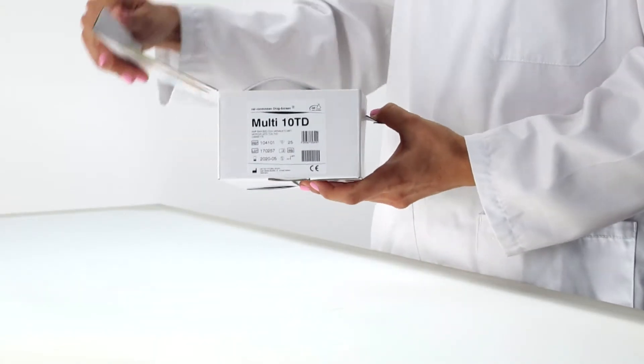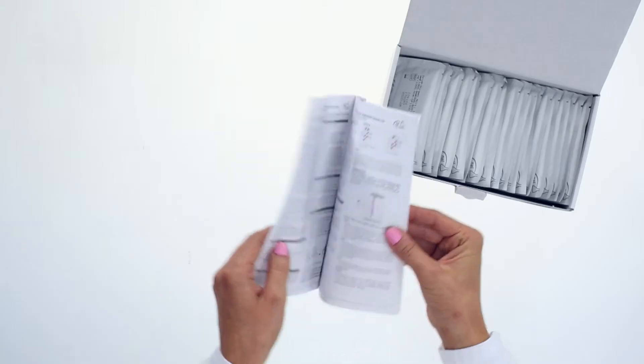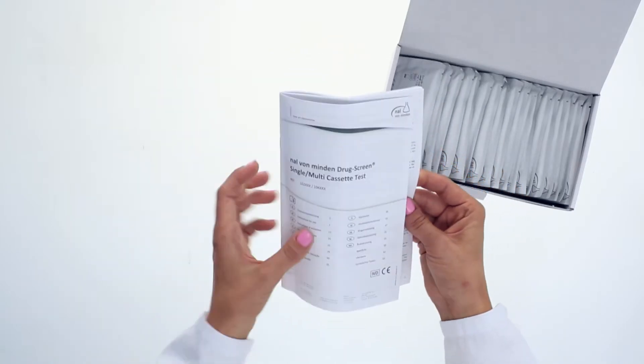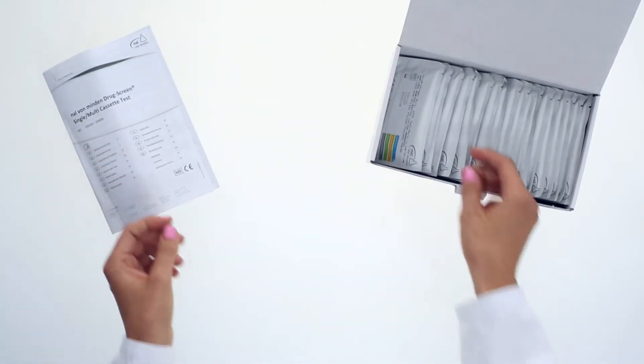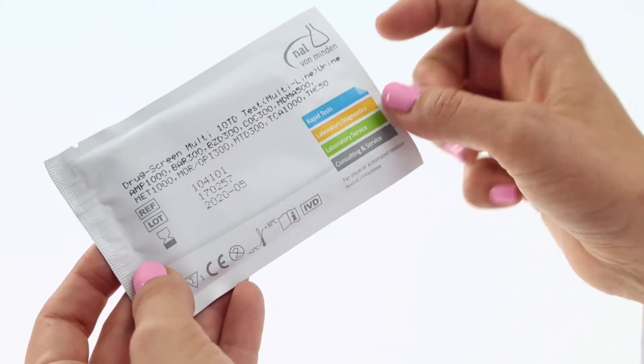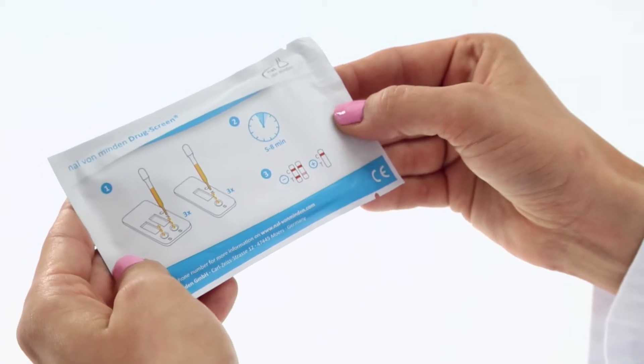All Nal von Minden drug screen rapid tests are based on the same test principle. Always start by reading through the instructions carefully. Do not use tests with damaged pouches or beyond the stated expiry date. You can also find brief instructions on the pouch.